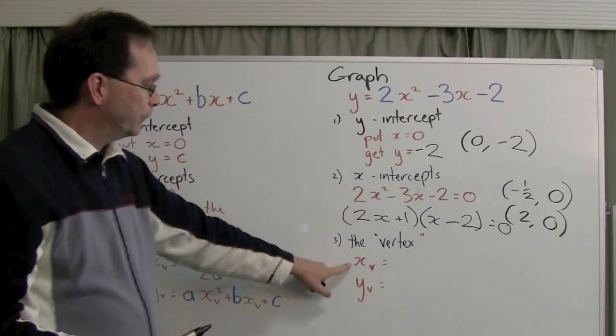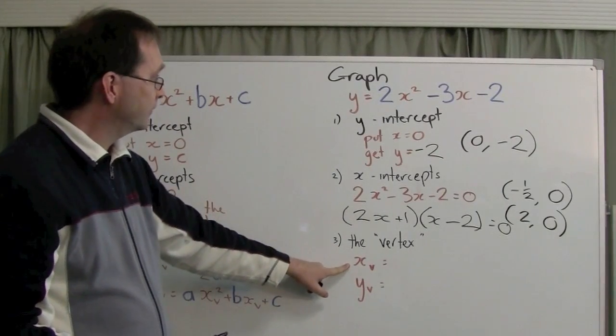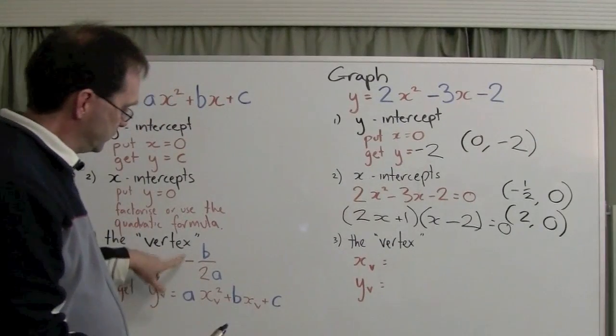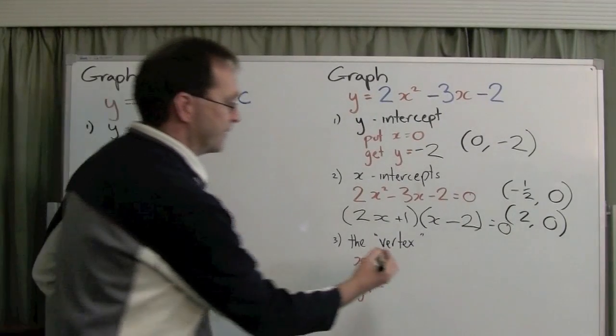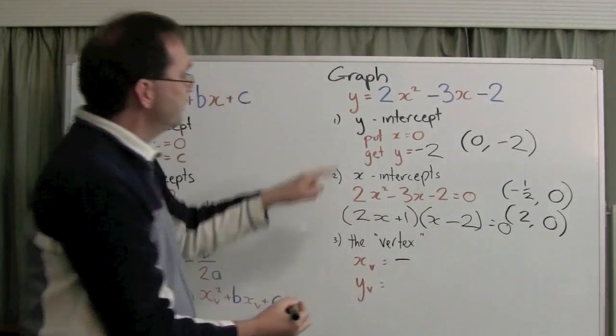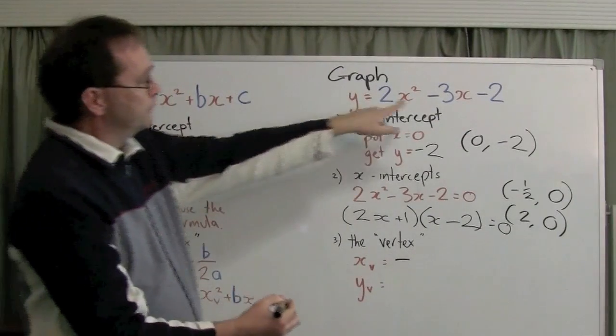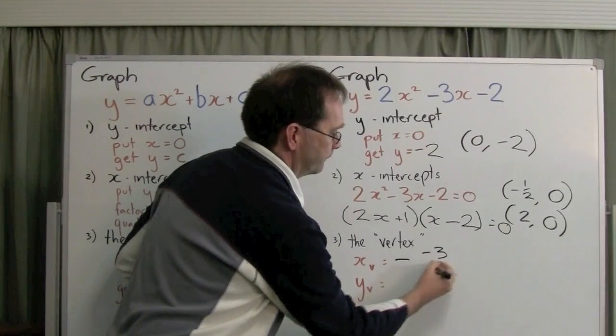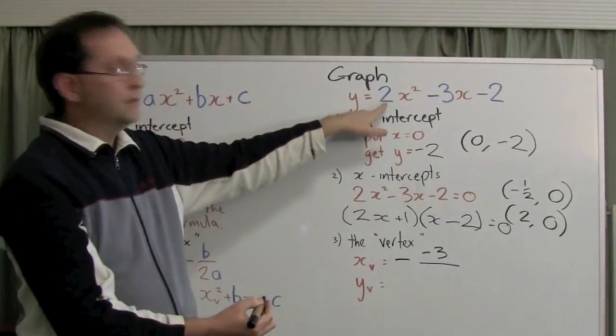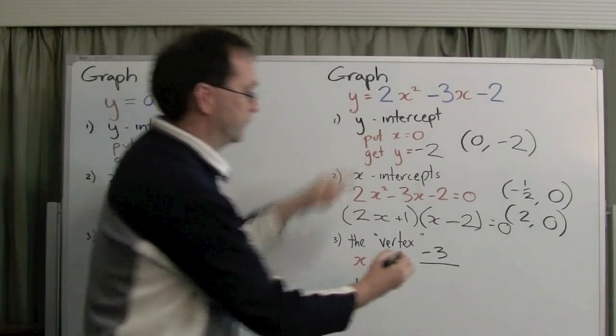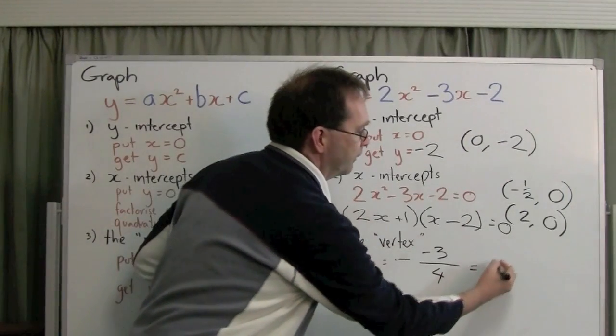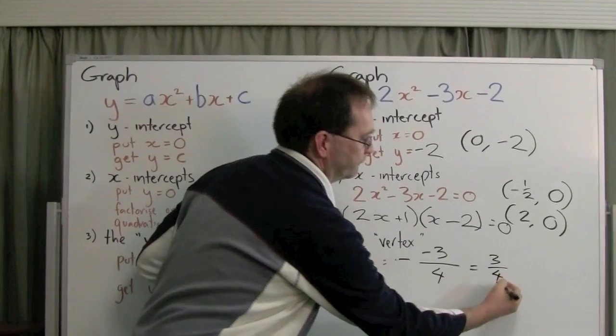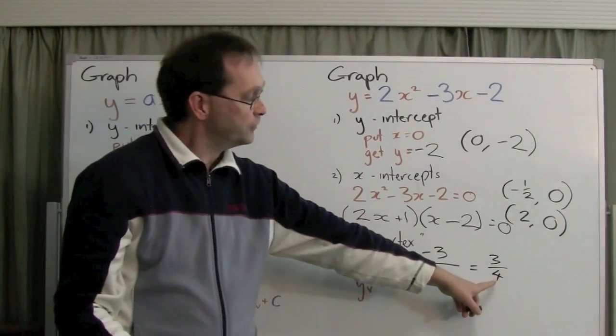Now we've got three points on the parabola. For the fourth and final point, that's the vertex, I'll use this equation. Minus b over 2 times a. That's minus, in this case, b is minus 3, minus 3, and 2 times a, is 2 times 2. So minus minus 3 over 4. That's just 3 quarters.